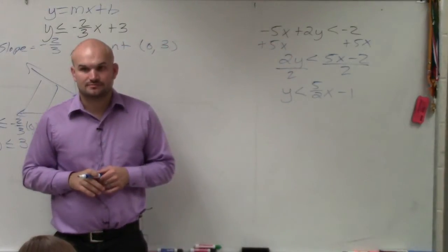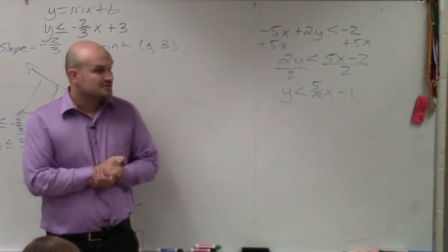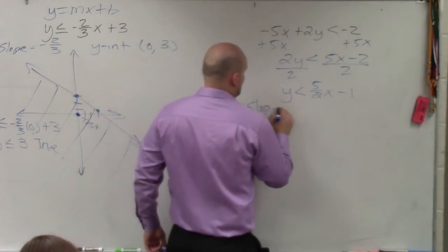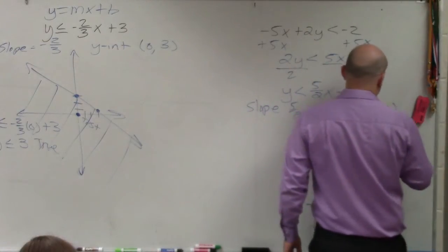Does everybody follow? Yes, no, maybe so. OK. So now we identify the slope and the y-intercept. Slope is 5-halves. y-intercept is 0, negative 1.